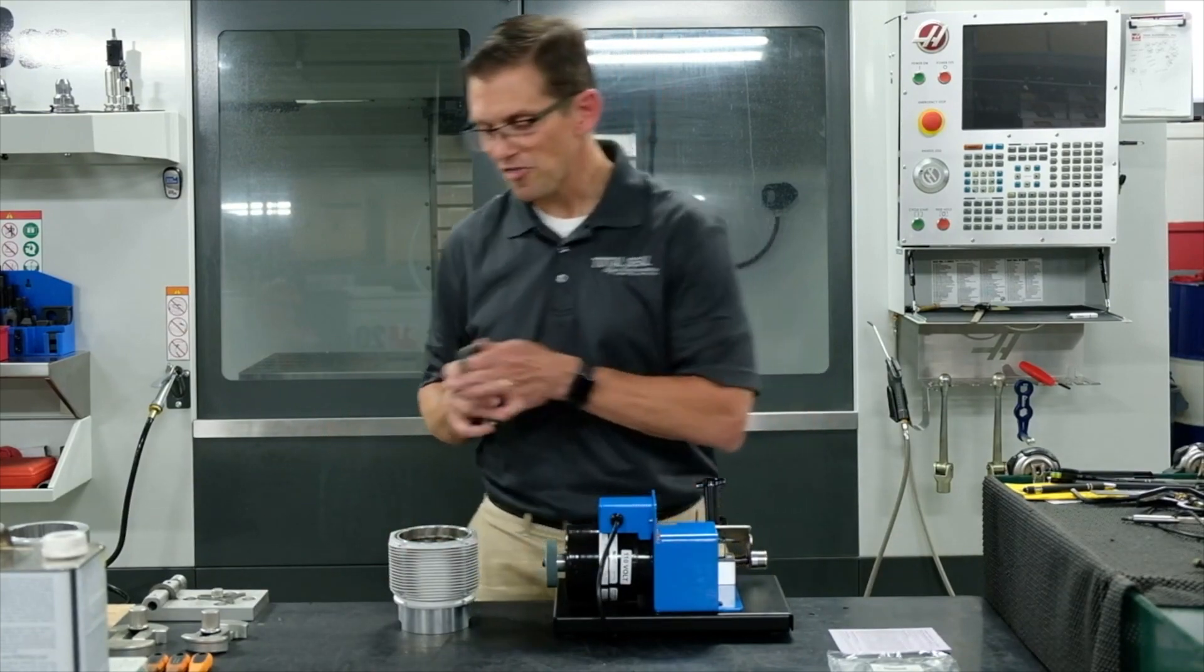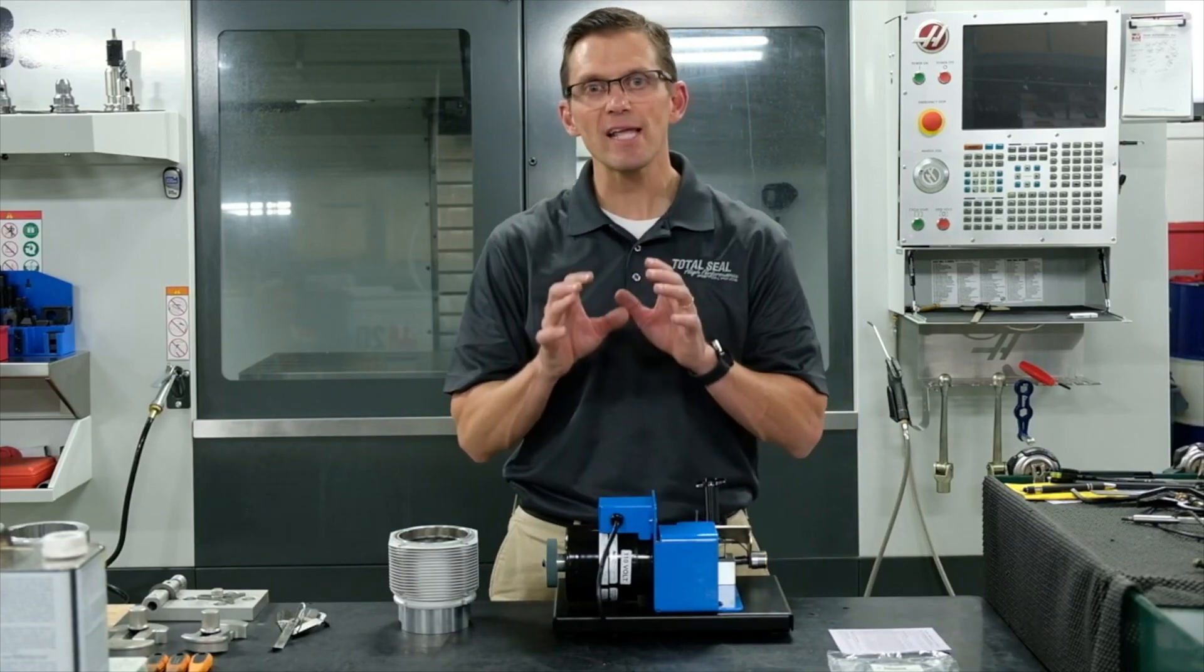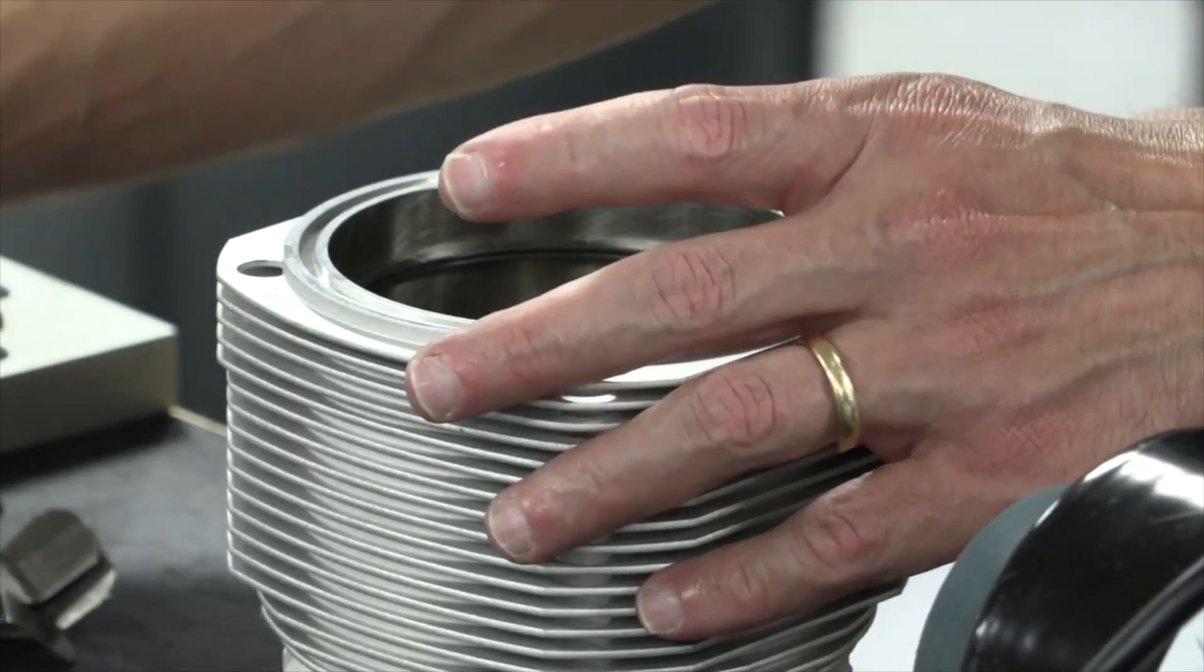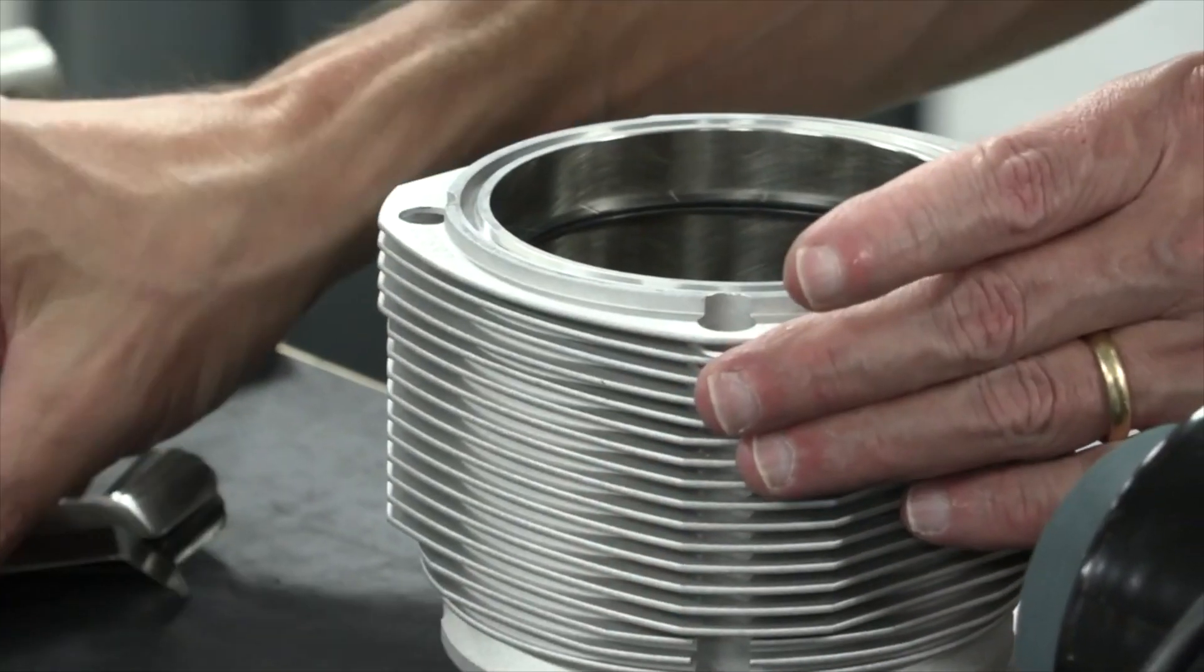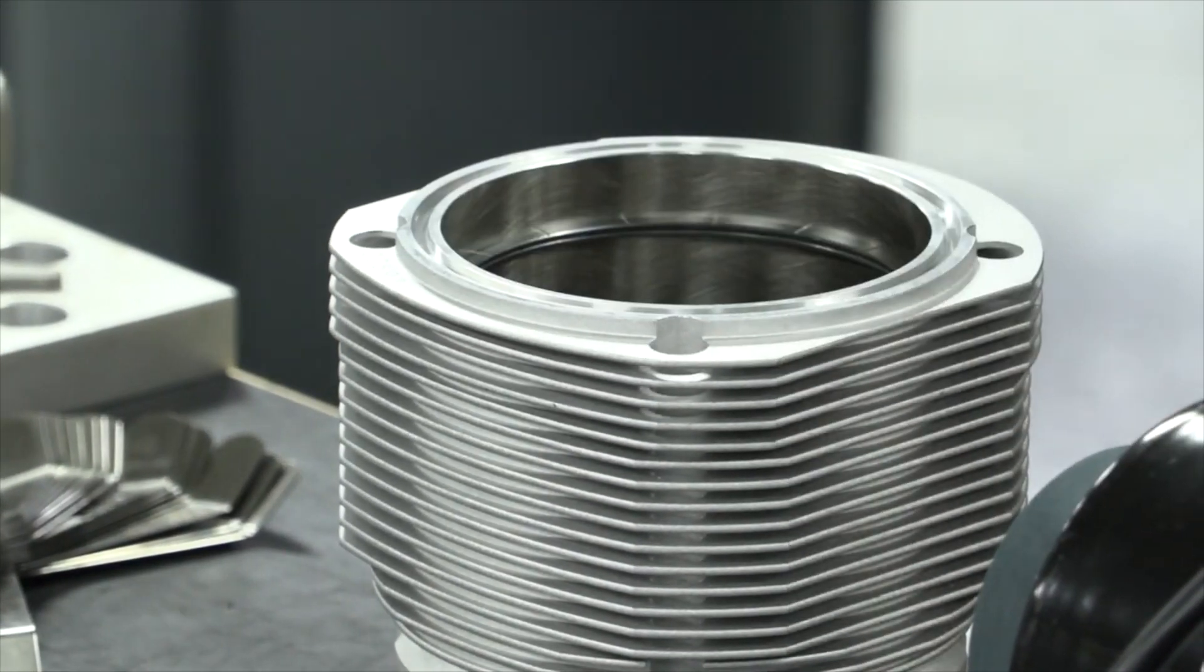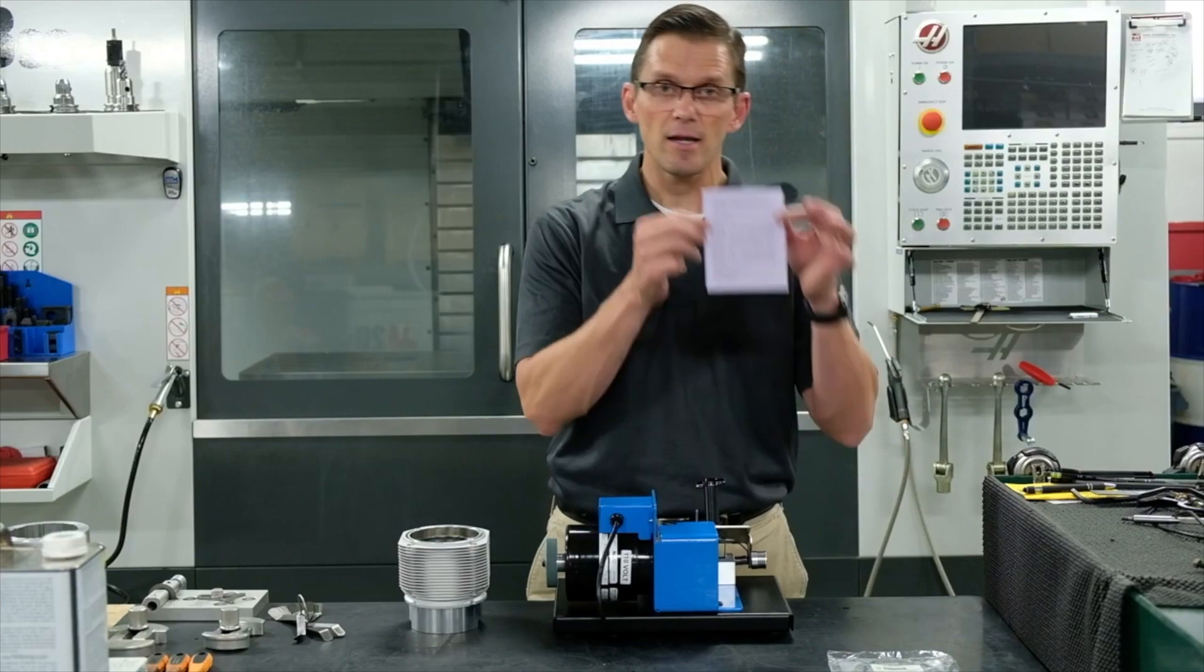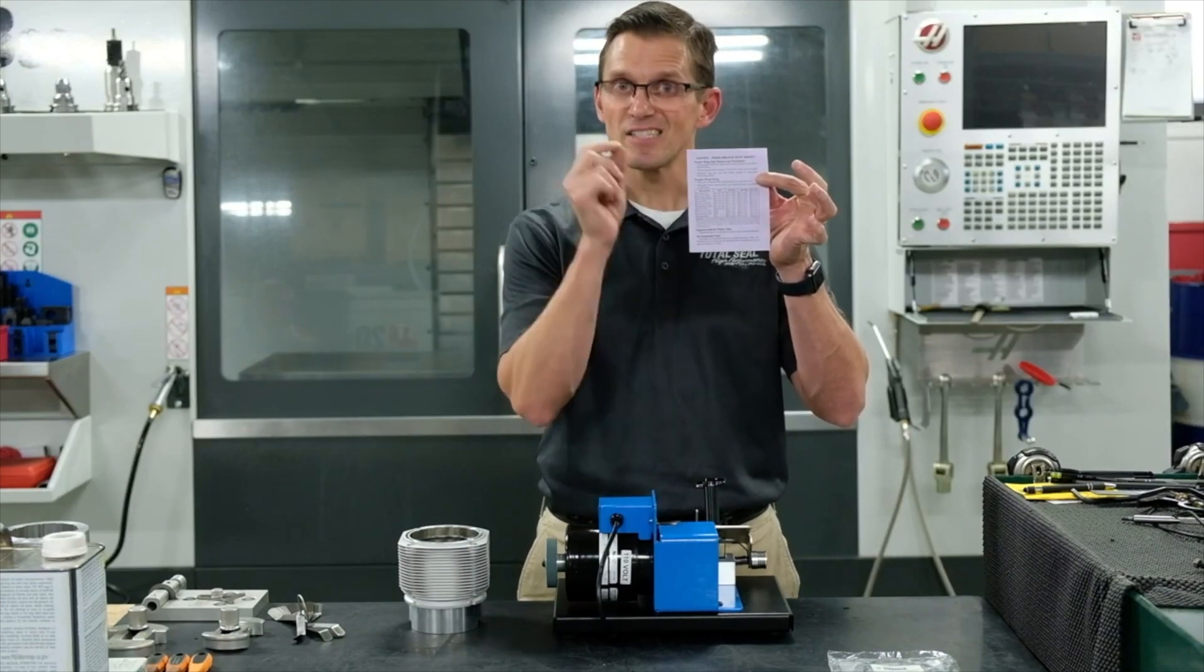Perfect. So that's how you use the Power Ring End Filer to set the ring end gap correctly, how to use the squaring tool to make sure it's correctly positioned in the bore, and use the feeler gauge to measure that ring end gap so that it measures back and equals what your calculation chart says to use.